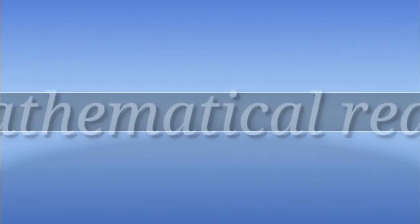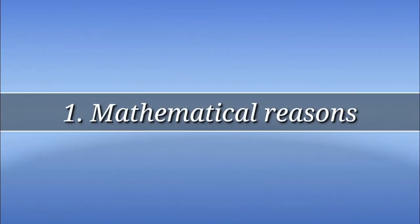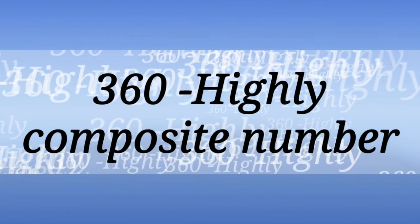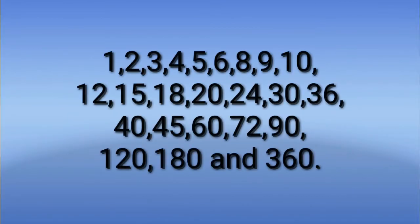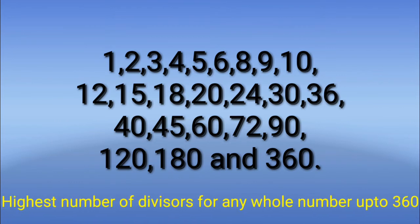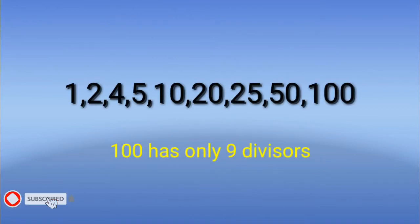Number one: mathematical reasons. 360 is a highly composite number. The number 360 is divisible by every number from 1 to 10, aside from 7. These 24 numbers are divisors of 360. This is the highest number of divisors for any whole number up to 360. One hundred has only nine divisors.